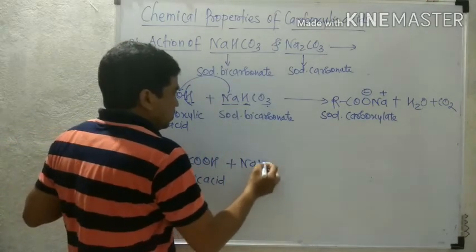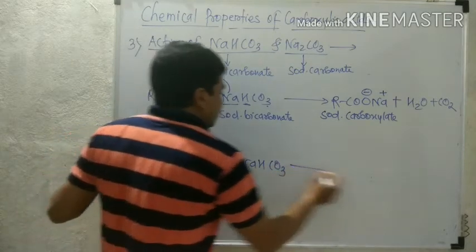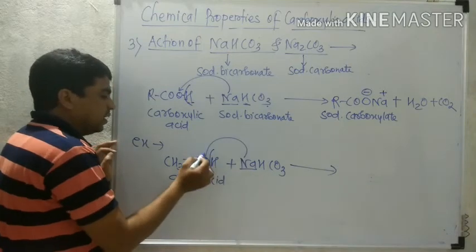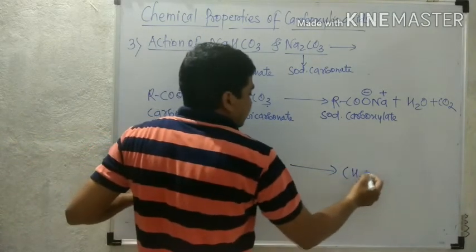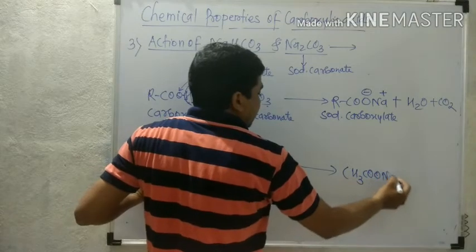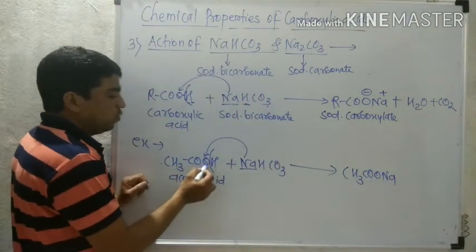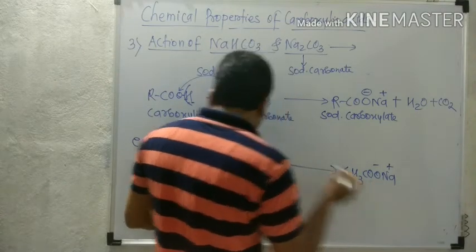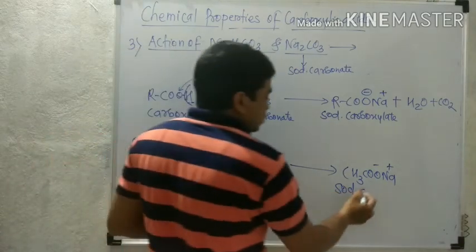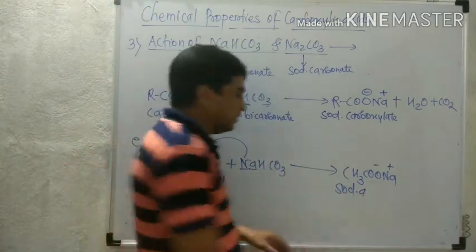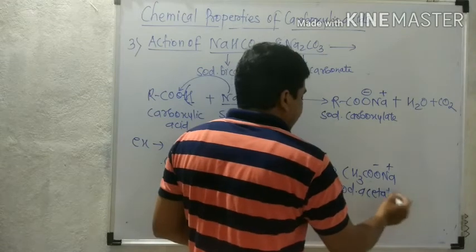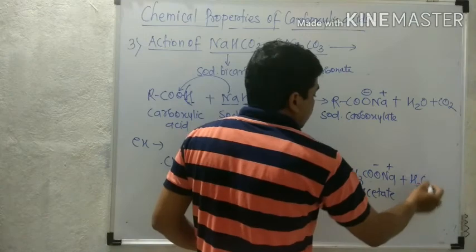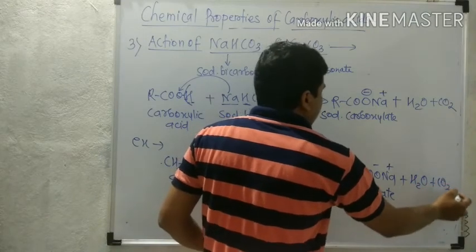For example, acetic acid (CH₃COOH) reacted with NaHCO₃ (sodium bicarbonate): the hydrogen atom is replaced by Na, giving CH₃COO⁻Na⁺ — sodium acetate — along with H₂O and CO₂.